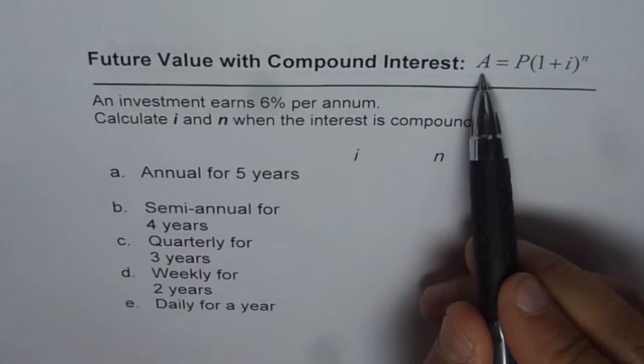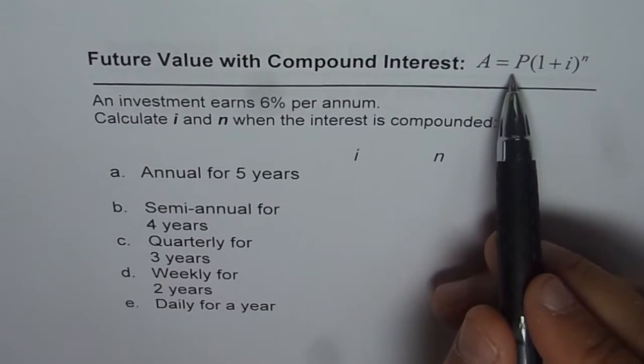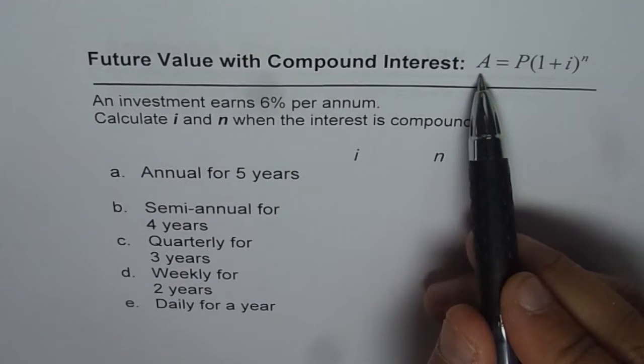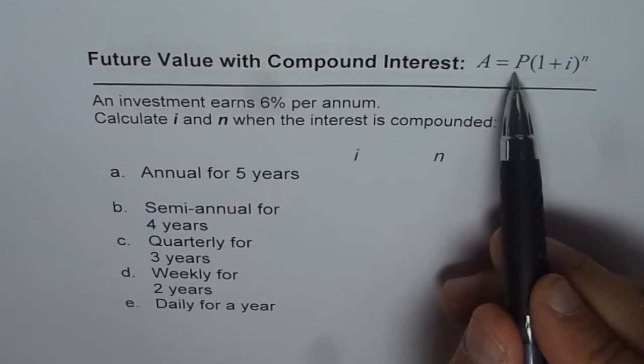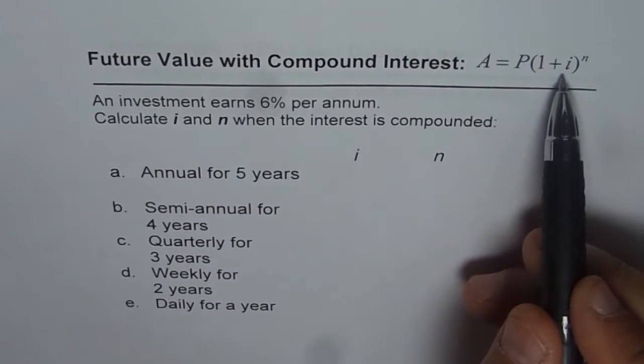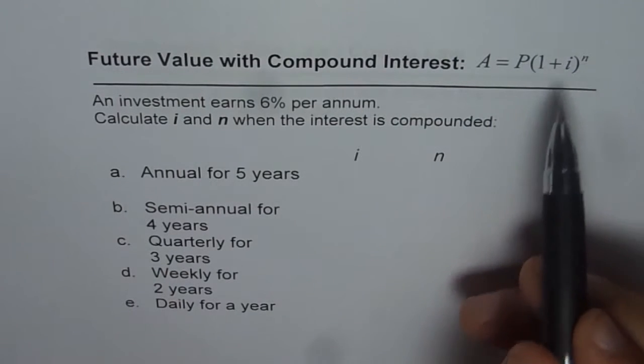Here A is the amount which you get in future and therefore it is also called future value at times. P is the principal amount which you invest. i is the interest rate for the compounding periods expressed in decimals and n is number of compounding periods.